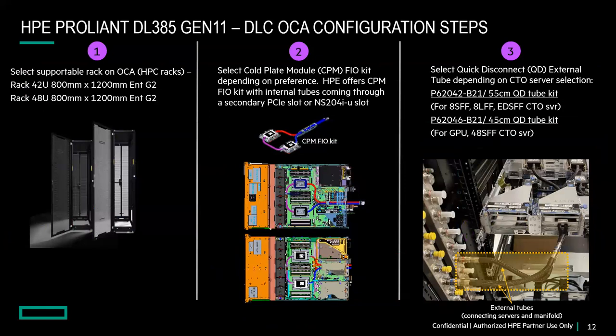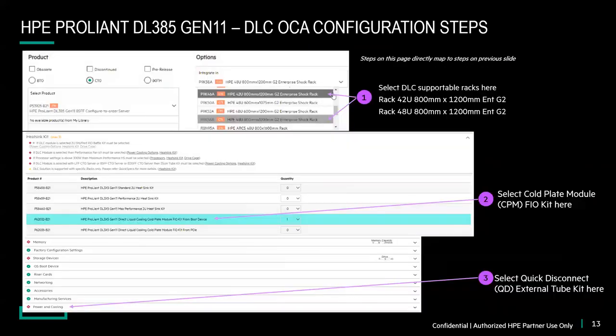In addition to selecting the cold plate and quick-disconnect kit, you also need the correct rack for direct liquid cooling — specifically the Enterprise G2 racks with an 800mm × 1200mm footprint, as opposed to the older standard 600mm × 1075mm. The extra depth and width provide room to route the pipes. In OCA, you can find the liquid cooling components under Processor → Heatsink Kit and under Power and Cooling.